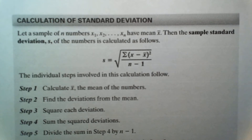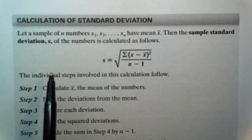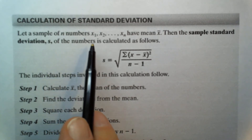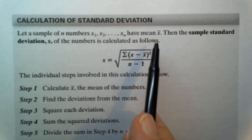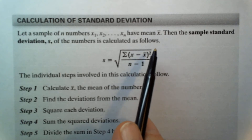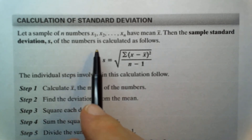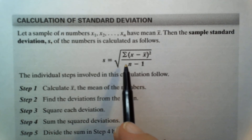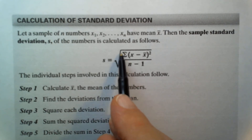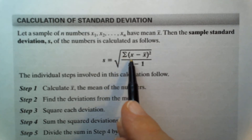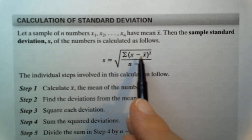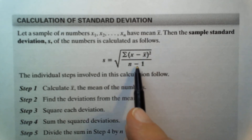A very common and widely used measure of dispersion is the standard deviation. Let a sample of n numbers, x sub 1, x sub 2 through x sub n, have a mean of x-bar. Then the sample standard deviation s is calculated as the square root of the summation of each data value minus the mean, squared, divided by n minus 1.